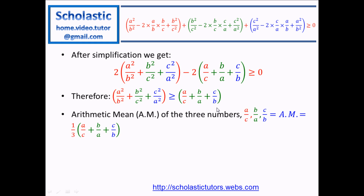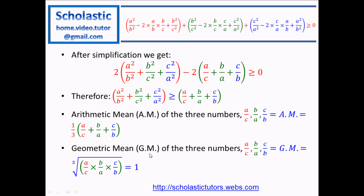This is part of the solution. Now we proceed with the given condition that arithmetic mean is greater than or equal to geometric mean. The arithmetic mean of the three numbers A over C, B over A, and C over B is: A over C plus B over A plus C over B, divided by 3. And the geometric mean of these three numbers is the cube root of their product: A over C times B over A times C over B.